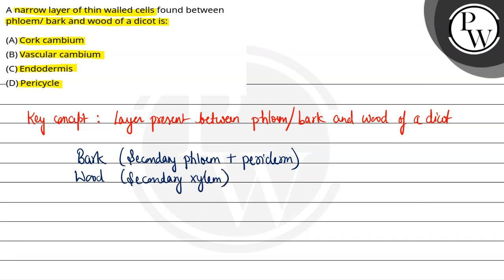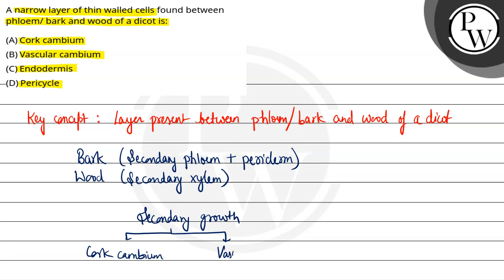We know that secondary phloem and secondary xylem are present. The secondary growth is because of two cambiums, which are the lateral meristems. The first one is the cork cambium and the other one is the vascular cambium.